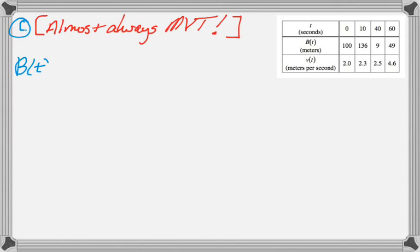Next question is C. And it's a question about must there be a time when something is true? You're going to find, as you practice, almost all of these questions are mean value theorem questions. So our hope is that the mean value theorem applies and that it gives us the value they're asking about. Well, B(t) is a differentiable function, which means that the mean value theorem does apply.